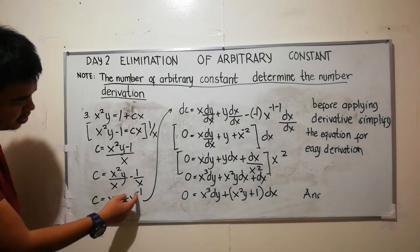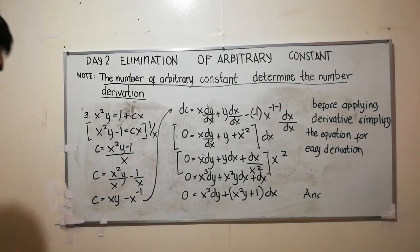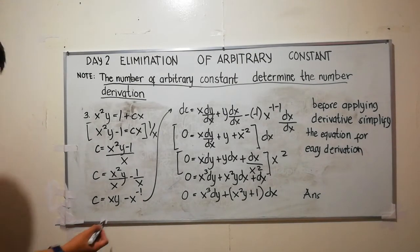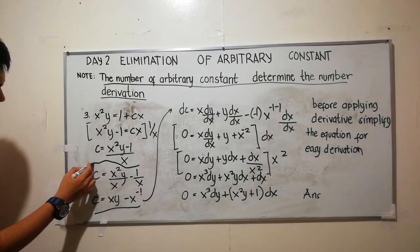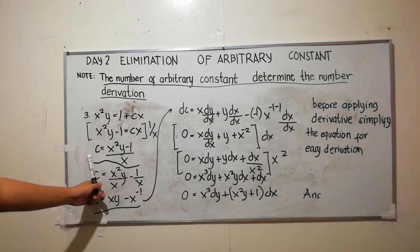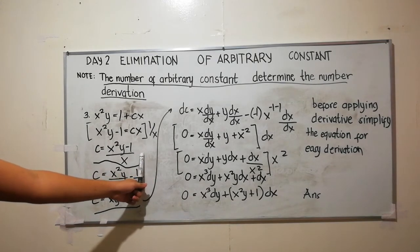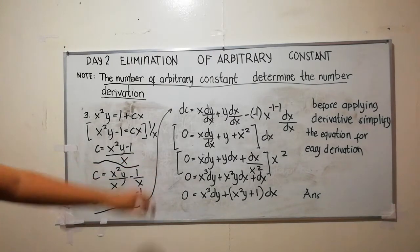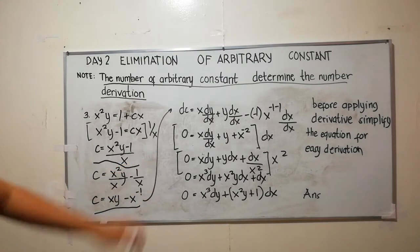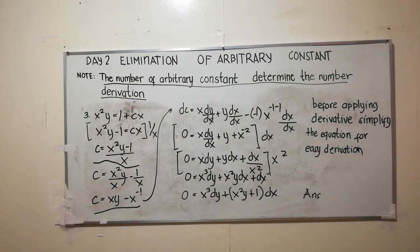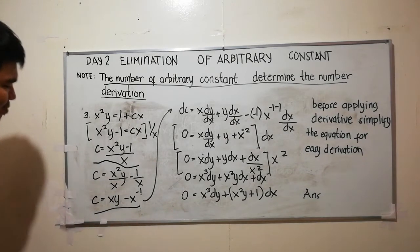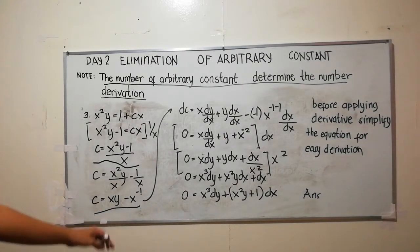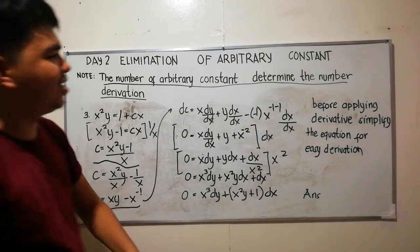Applying the law of exponents, this simplified form is the easiest form to work with. The other form — c equals (x squared y minus 1) over x — is more complicated because finding its derivative requires the derivative of a product. That is why we simplify first before applying differentiation.